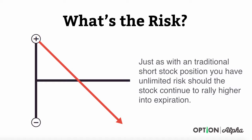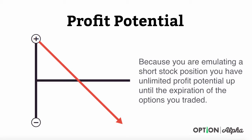What's the risk? Just as with the traditional short stock position, you do have unlimited risk should the stock continue to rally higher into expiration. We're not trying to change anything here — we're just trying to use our capital a little bit more efficiently but create the same profit and loss diagram. As far as profit potential goes, because you are emulating a short stock position, you have unlimited profit potential up until expiration, though really it's limited to the stock going to zero of course.